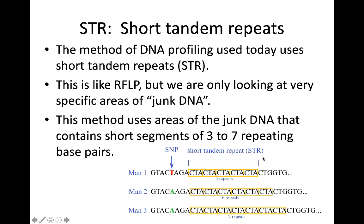Let's make the distinction. In RFLP, we're using a restriction enzyme to cut the DNA in the junk DNA, making long strands of DNA which we then run on an electrophoresis gel. We see a banding pattern specific to that person because their lengths of DNA that have been cut are unique to them. With STR, we are looking for how many of these short tandem repeated sequences of DNA we're finding in very specific spots of junk DNA.